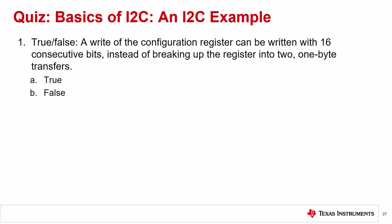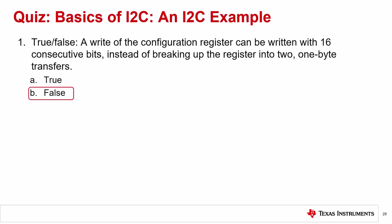Question 1. True or False: A write of the configuration register can be written with 16 consecutive bits instead of breaking up the register into two one-byte transfers. The correct answer is B, false. I2C transmissions come in a single-byte transmission frame. This is standardized, and both controller devices and target devices know that the transmission will come in a set format.